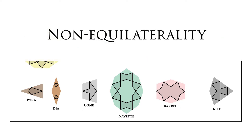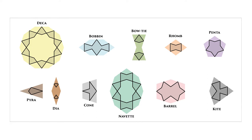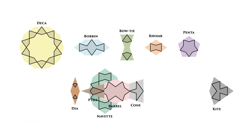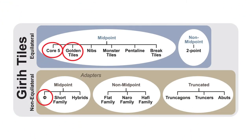Non-equilaterality: with its 5 tiles, the Core 5 Tile Set is easy to keep track of. With more tiles added, the Evolved Tile Set would benefit from being more structured. The next step is to organize the tiles based on side length. All the Core 5 tiles have equilateral sides, but many Islamic geometric patterns require non-equilateral tiles. The focus of this paper is the Phi category, which is the most common non-equilateral category.